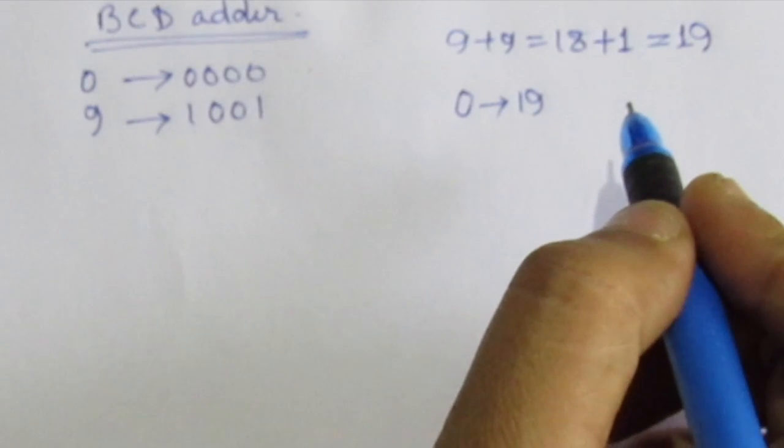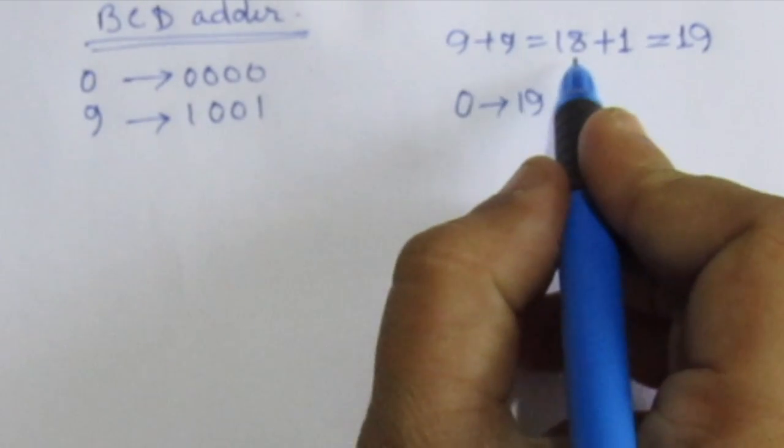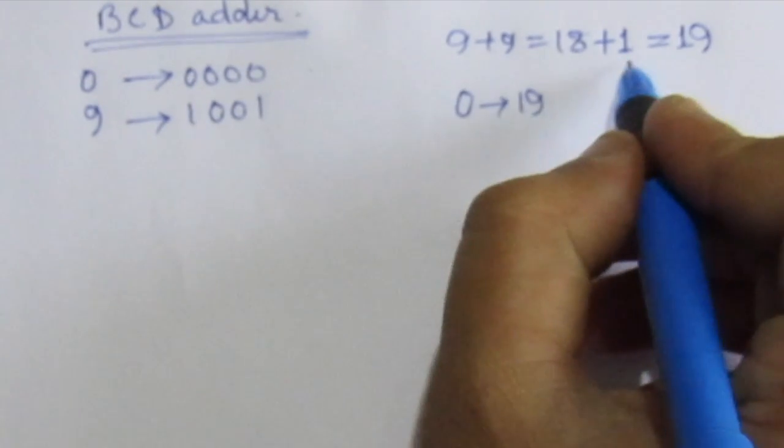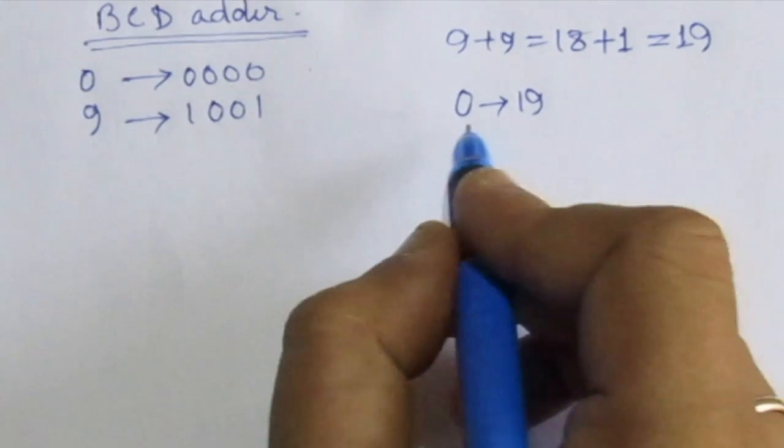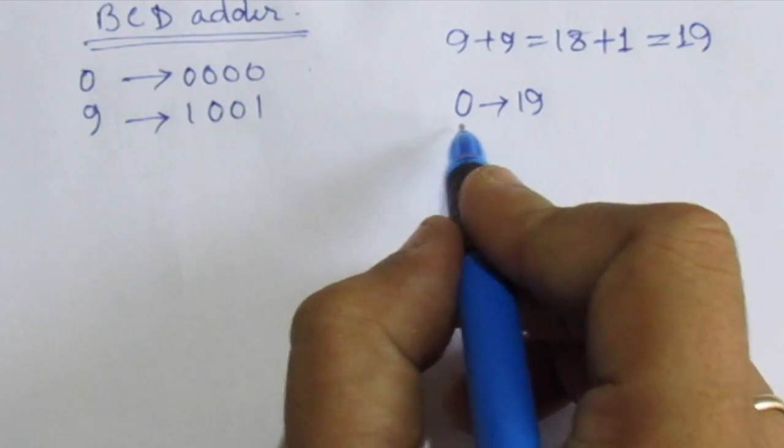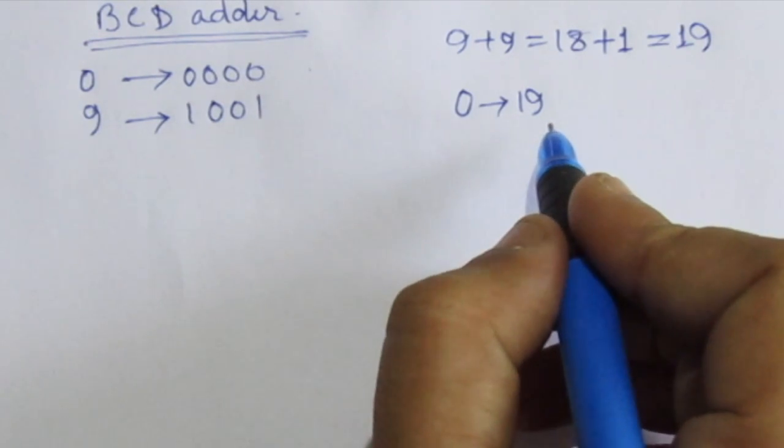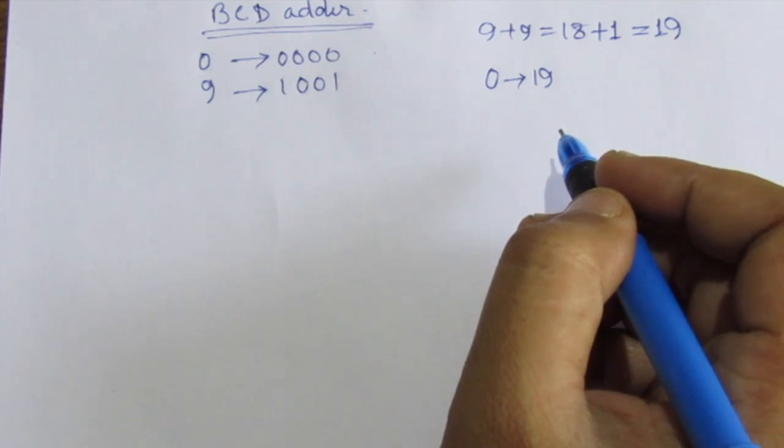In case of decimal addition, we can have a maximum of 9 plus 9 equal to 18. And if we have a carry input, then we will have maximum of 19. That means we need to represent a minimum of 0 to maximum of 19 in terms of binary sum and BCD sum. So let us make the derivation of BCD adder table.